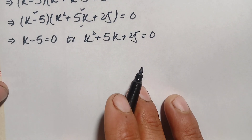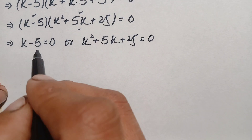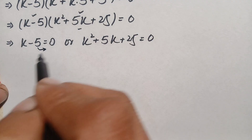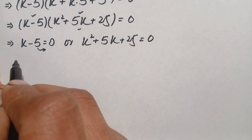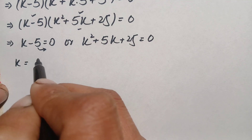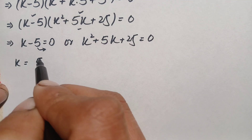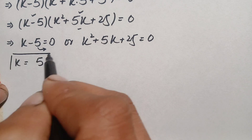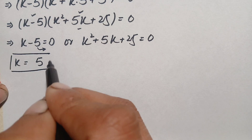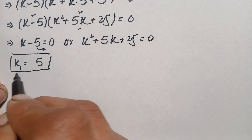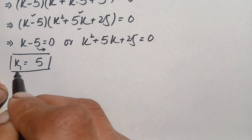First we will solve the linear equation. We move 5 to the right hand side, so it becomes positive 5 and the value of k is 5. So k equals +5 is our first real solution, which we call k1.